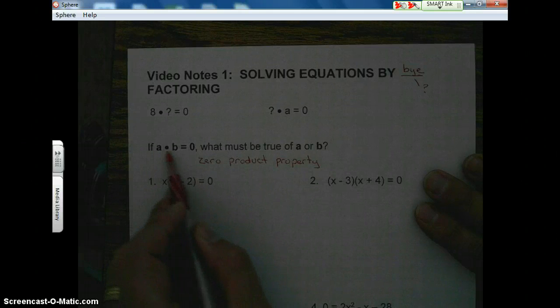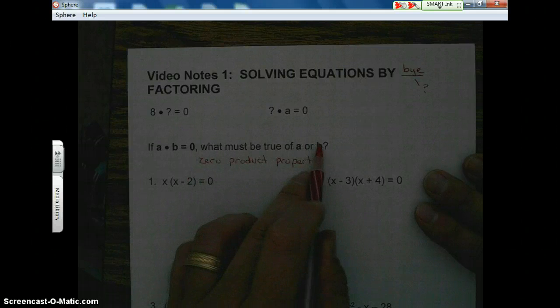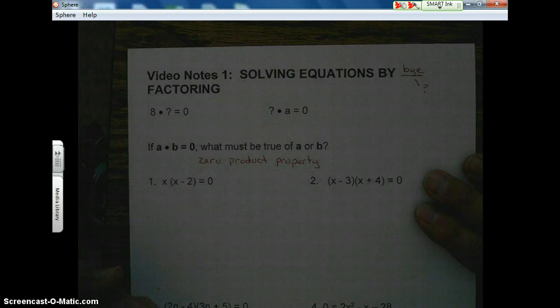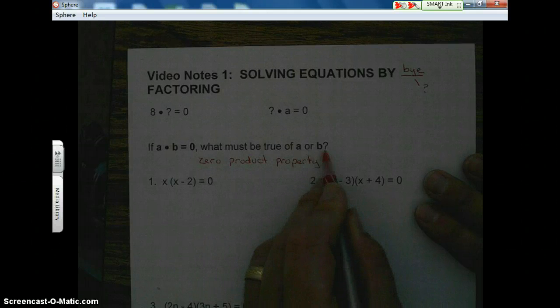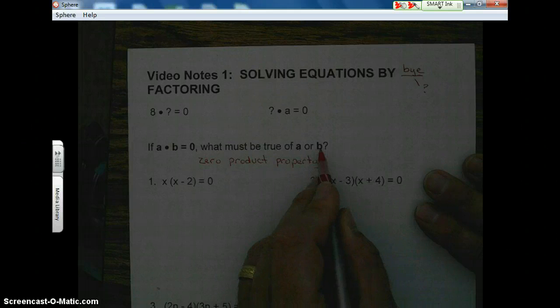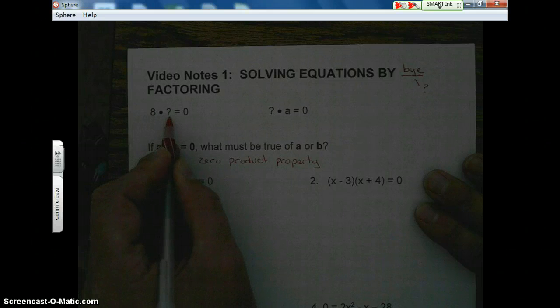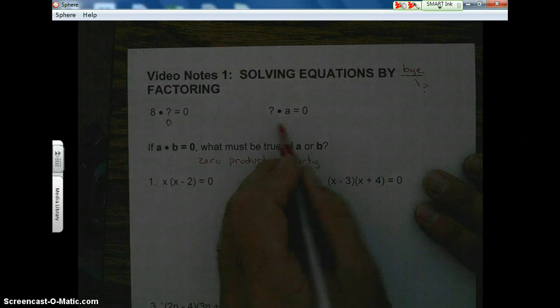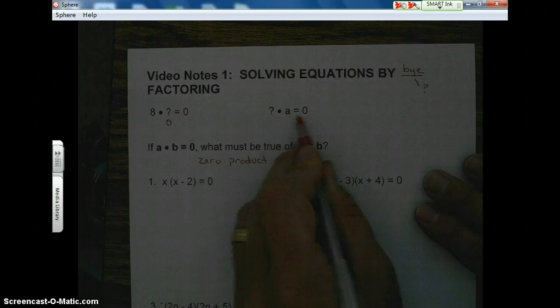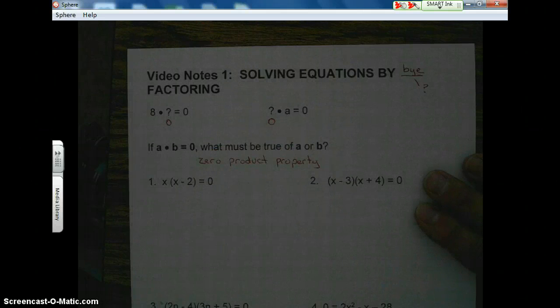If A times B is equal to zero, what must be true of A or B? Well, one of them, or maybe even both of them, one of them must be equal to zero. For example, eight times what equals zero? Well, obviously, the only number that works is zero. So what times A equals zero? Well, obviously, it has to be zero.